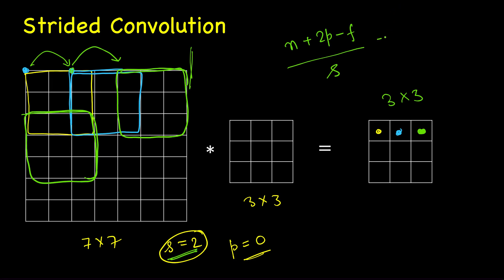Here everything else is same, only stride is 2, so it's 3 cross 3. So here the number of pixels in the output image will be n plus 2p minus f divided by s plus 1.